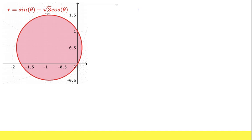R is equal to sin theta minus square root of 3 times cosine theta. Right here, it looks like it's a starting point, but if you think about it, if theta is equal to 0, sin theta is equal to 0.